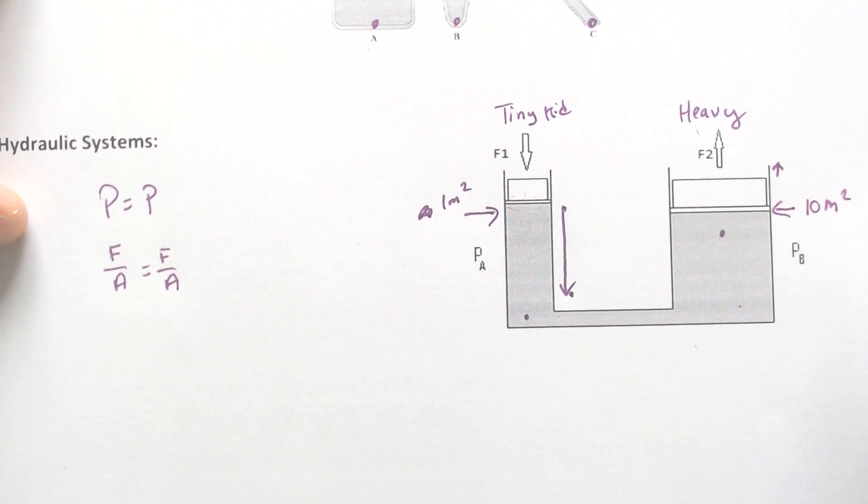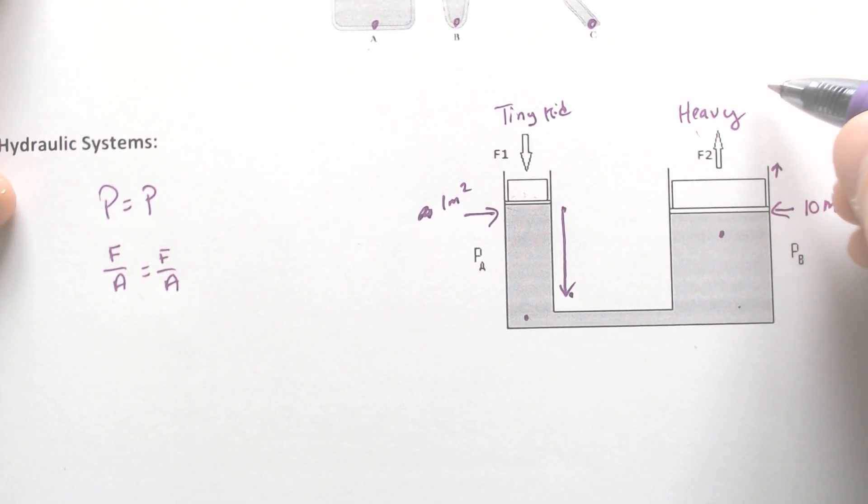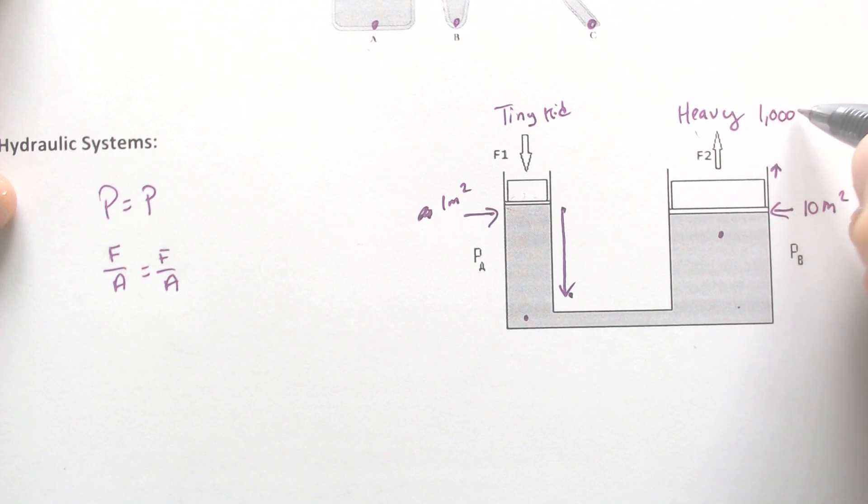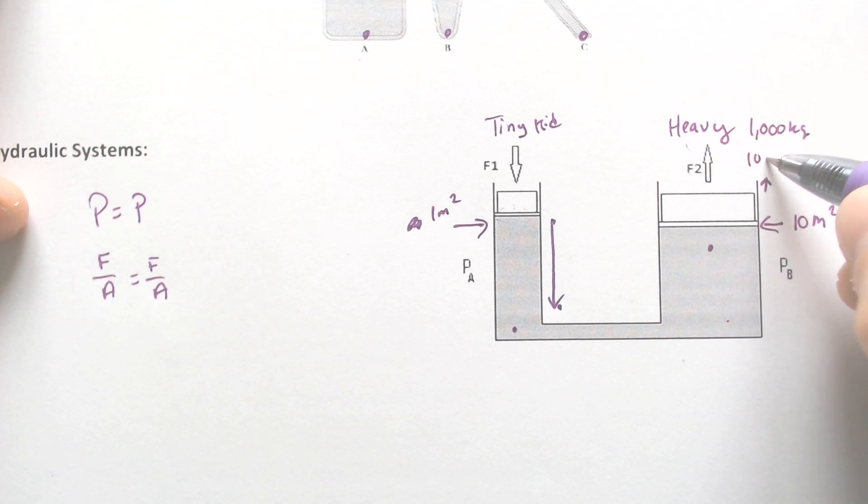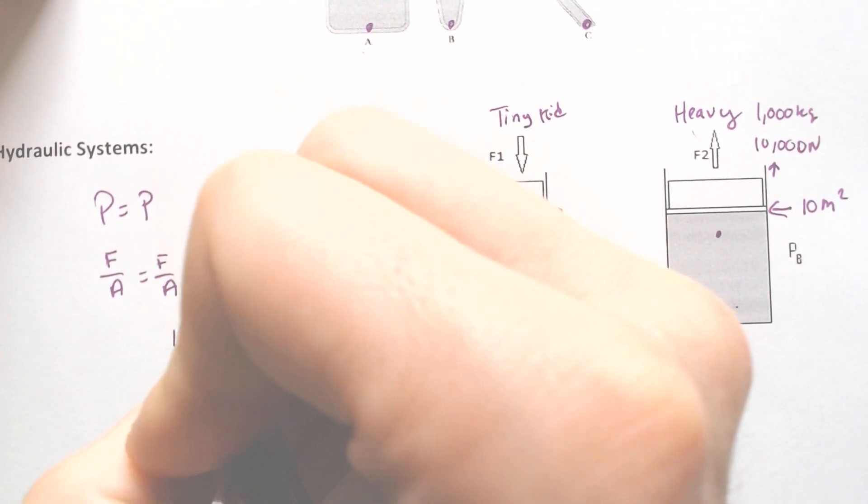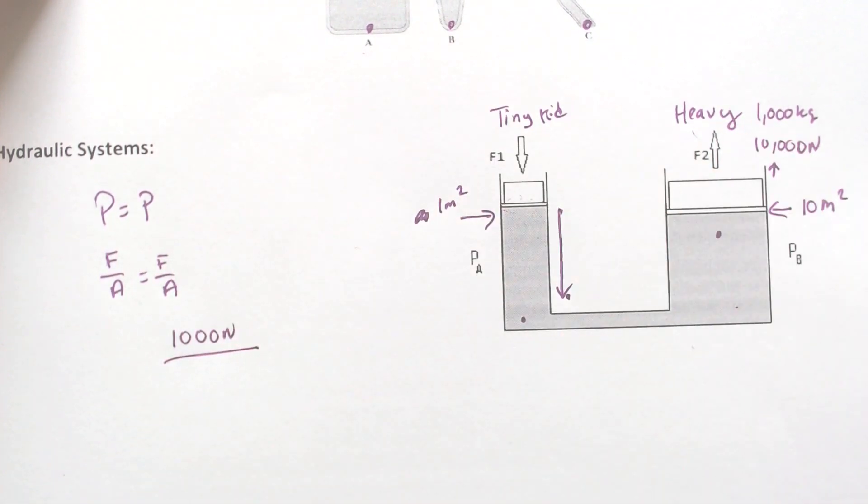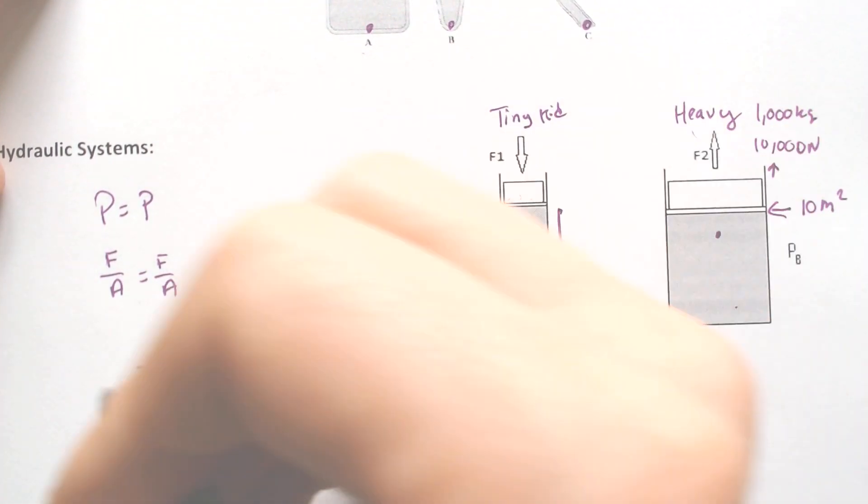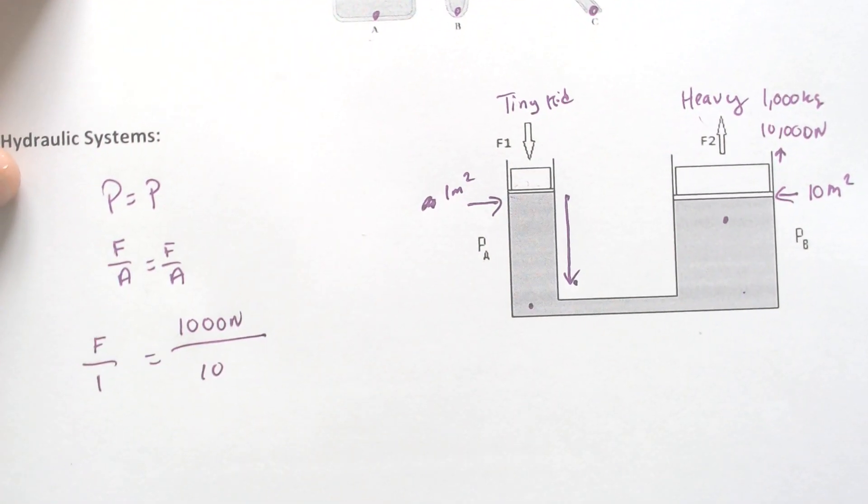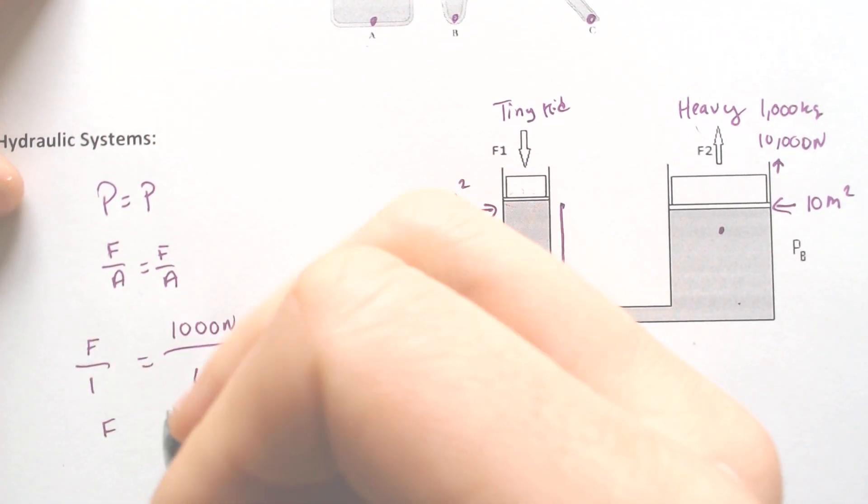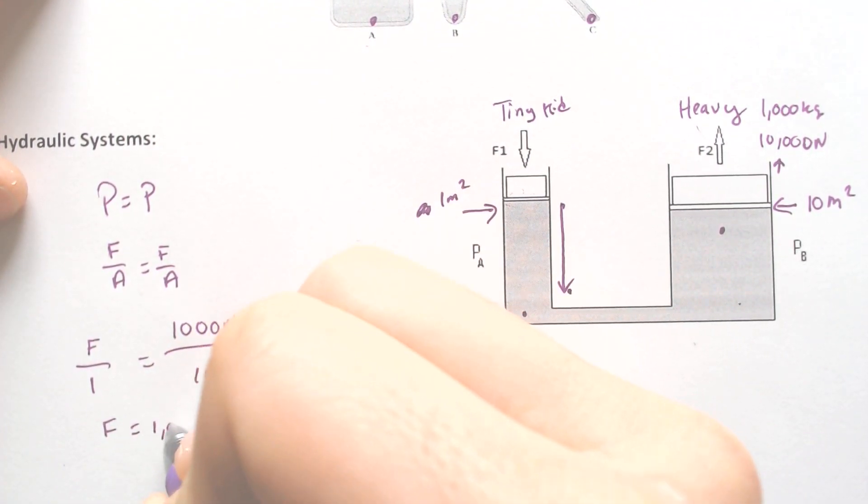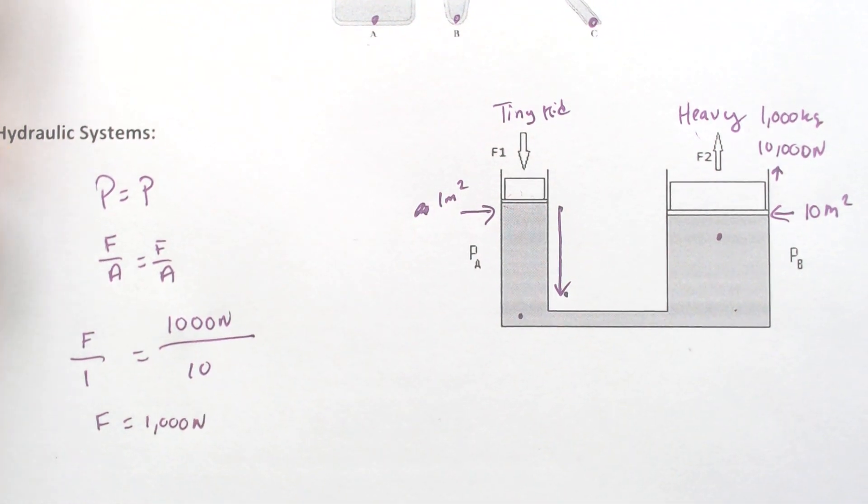Now, the force that would have to be applied, let's say we're wanting to lift a really heavy 1,000 kilogram thing, which nobody that I know of can actually do. That is going to equal, if we multiply it by 10, 10,000 newtons. So we would have 10,000 newtons for the car divided by an area of 10 must equal the force that this kid is going to have to apply divided by 1. Let's see what happens here. We would have 10,000 divided by 10. The force that you would have to apply is 1,000 newtons.